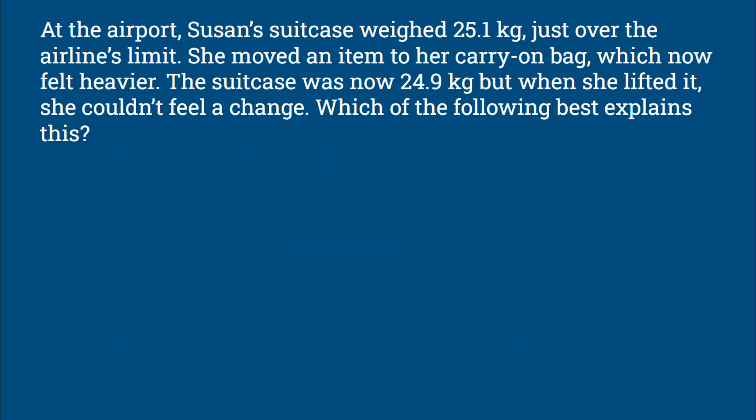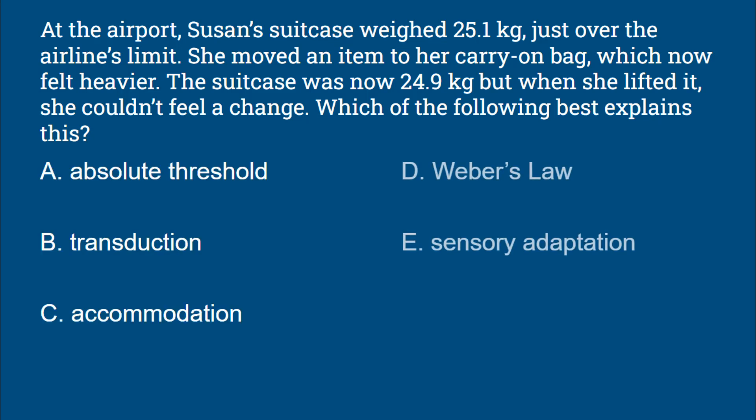At the airport, Susan's suitcase weighed 25.1 kilograms, just over the airline's limit. She moved an item to her carry-on bag, which now felt heavier. The suitcase was now 24.9 kilograms, but when she lifted it she couldn't feel a change. Which of the following best explains this? Absolute threshold, transduction, accommodation, Weber's law, or sensory adaptation.